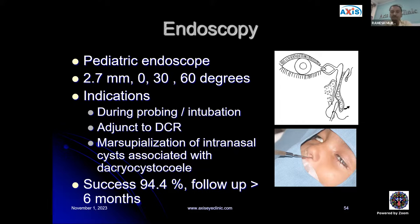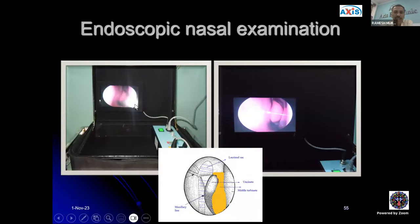Endoscopy is an important part of treatment. A pediatric endoscope — usually 2.7 mm in 0, 30, and 60 degrees — is used during probing, intubation, adjunct to DCR, endonasal DCR, or marsupialization of intranasal cysts associated with dacryocystocele. Success with endoscopic procedures rises to 94.4% at follow-ups more than 6 months. Infracture of the inferior turbinate should always be done under endoscopic visualization. The anatomy visible includes the uncinate process, middle turbinate, maxillary bone, and location of the lacrimal sac.